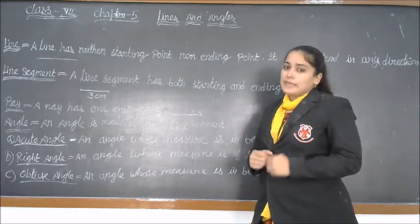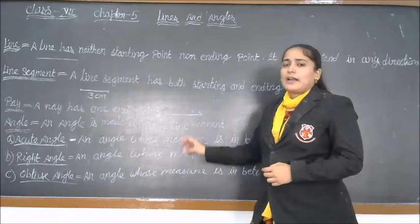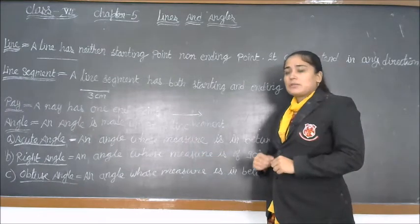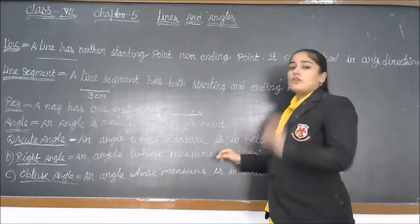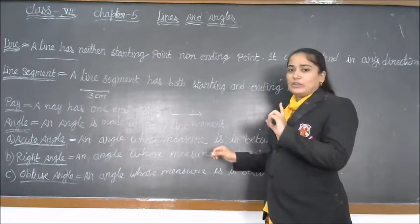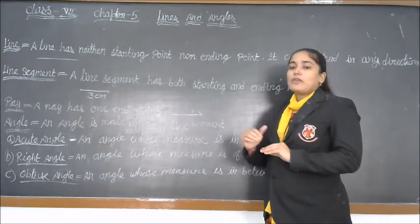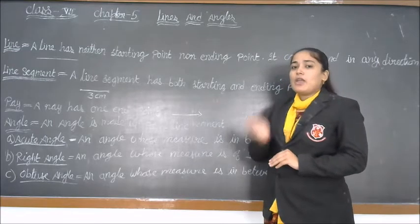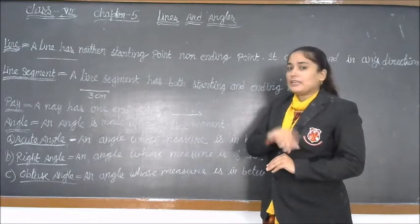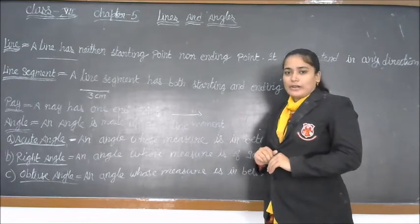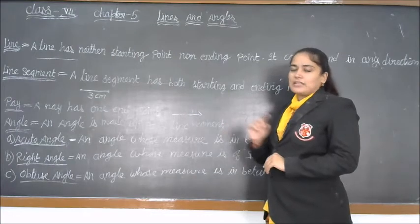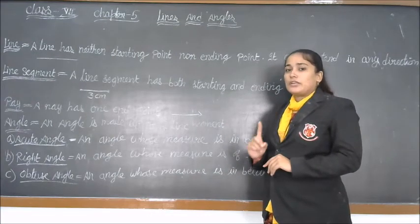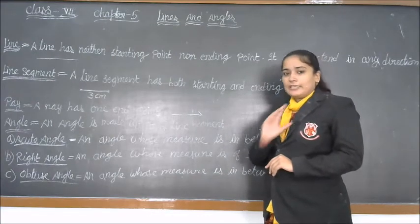The second type is right angle. A right angle is of exact measurement — it is exactly 90° only. If we have 91°, it is not a right angle. If we have 89°, it is also not a right angle. A right angle is of only 90°.